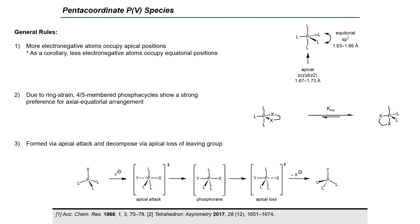There are general rules established for the behavior of pentacoordinate phosphorus compounds, which can be considered more as guidelines. First, more electronegative atoms tend to occupy the apical positions of the trigonal bipyramid, and less electronegative atoms occupy the equatorial positions. Secondly, due to ring strain, four- and five-membered phosphacycles show a strong preference for an apical-equatorial arrangement to adopt optimal bond angles. Thirdly, in stepwise associative substitution mechanisms, phosphoranes form via attack of the nucleophile at the apical position and decompose via loss of the leaving group from the apical position.